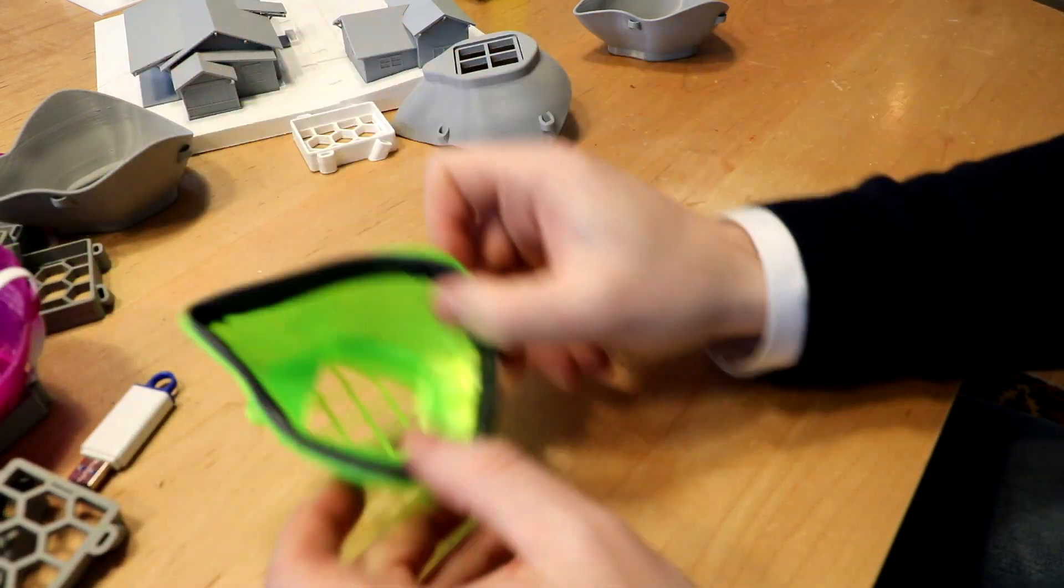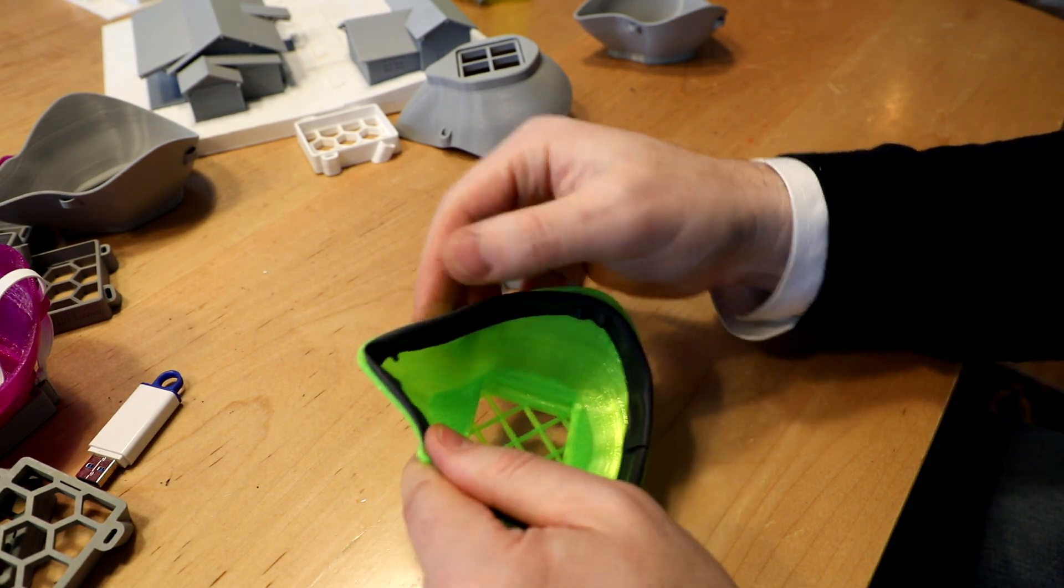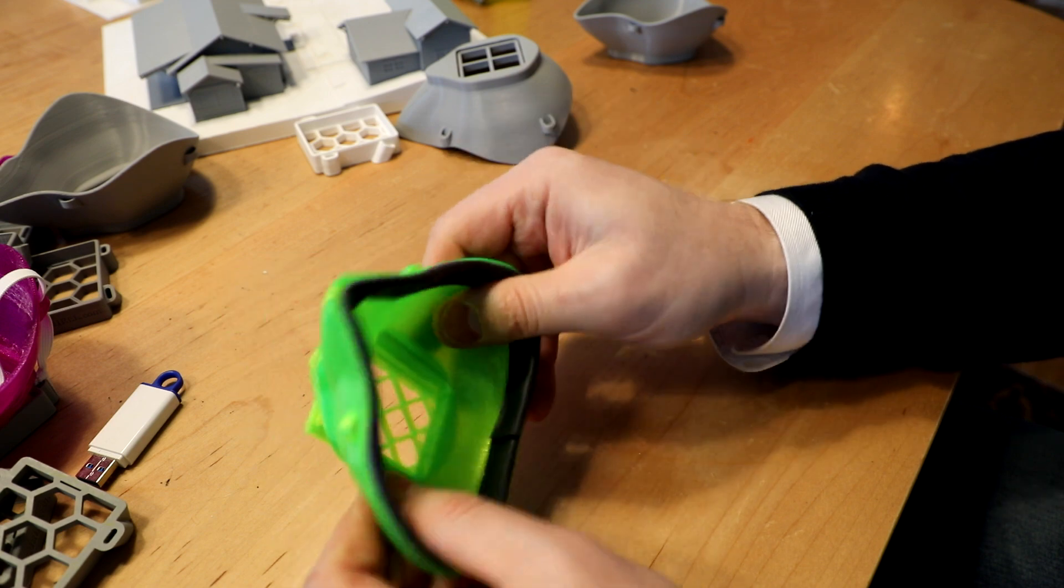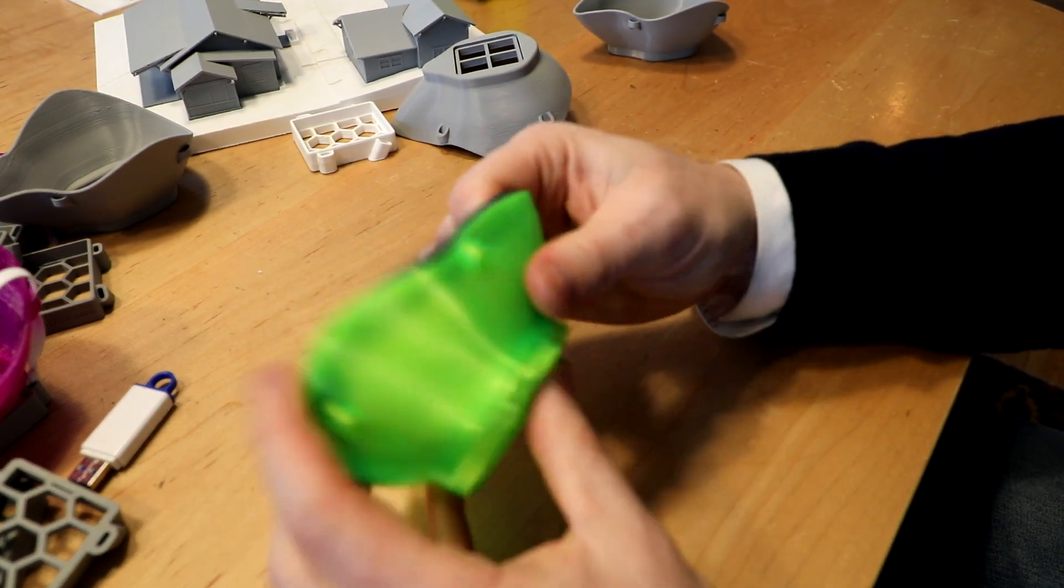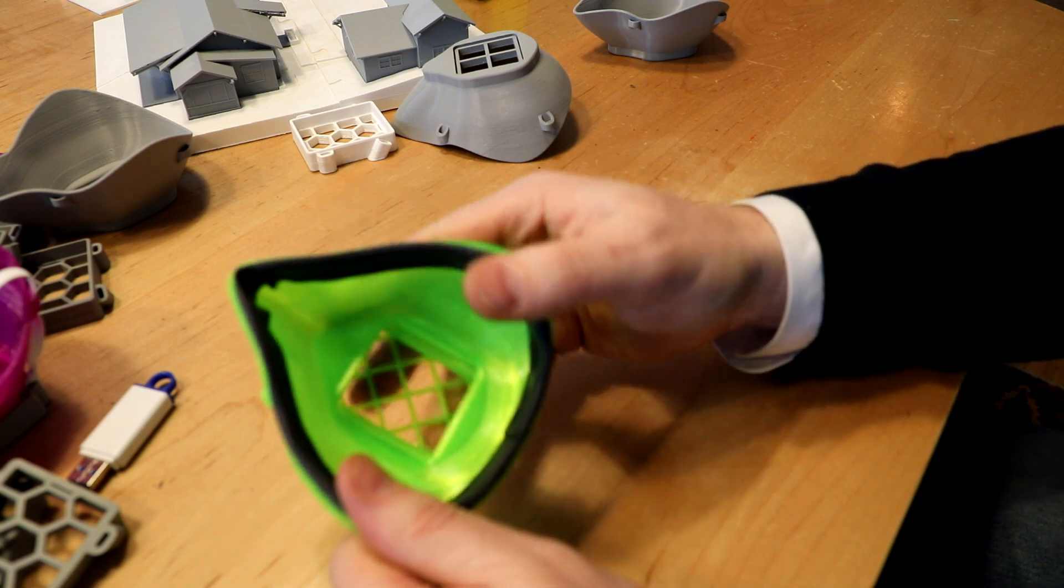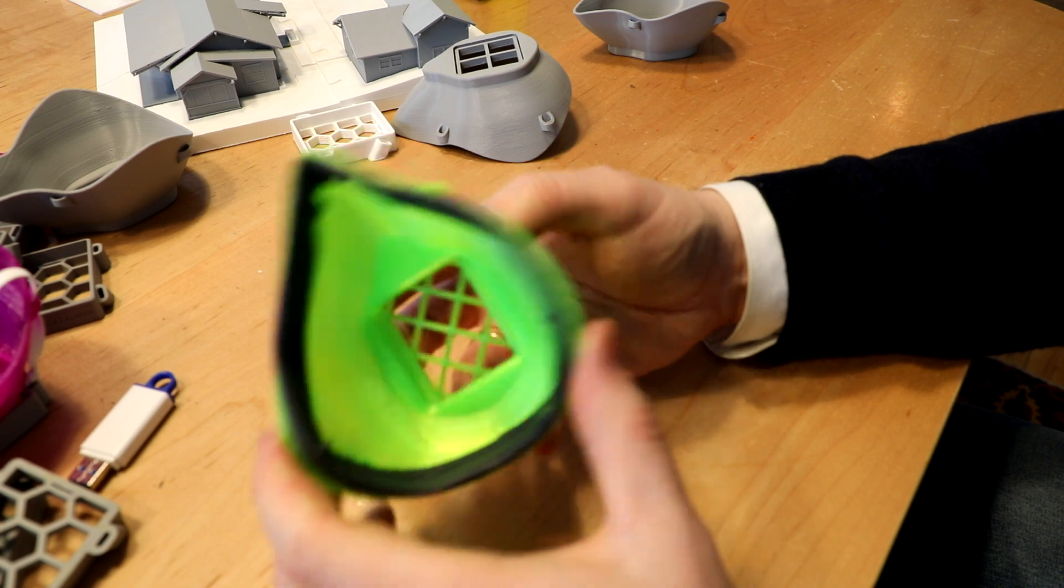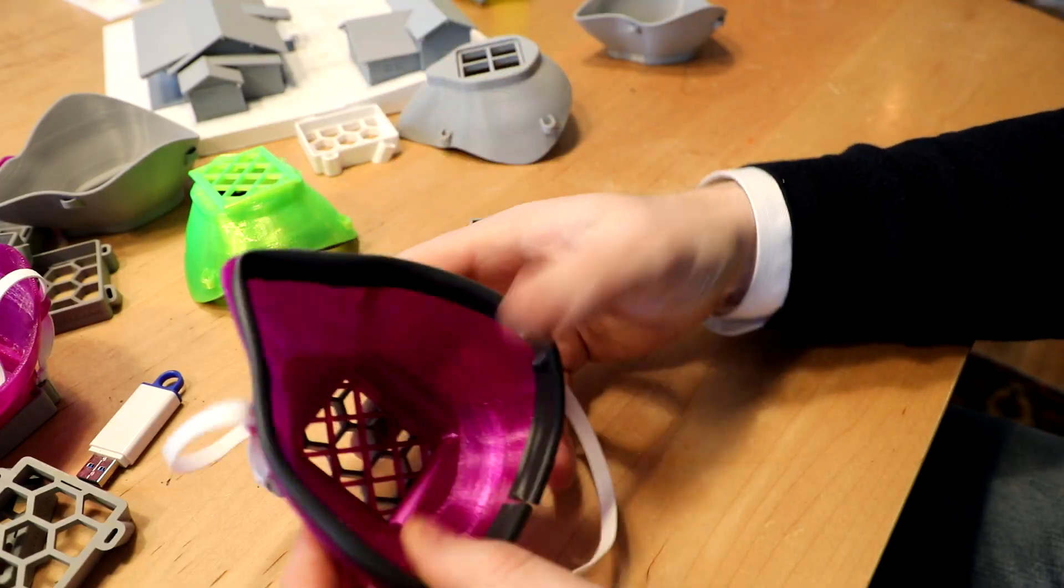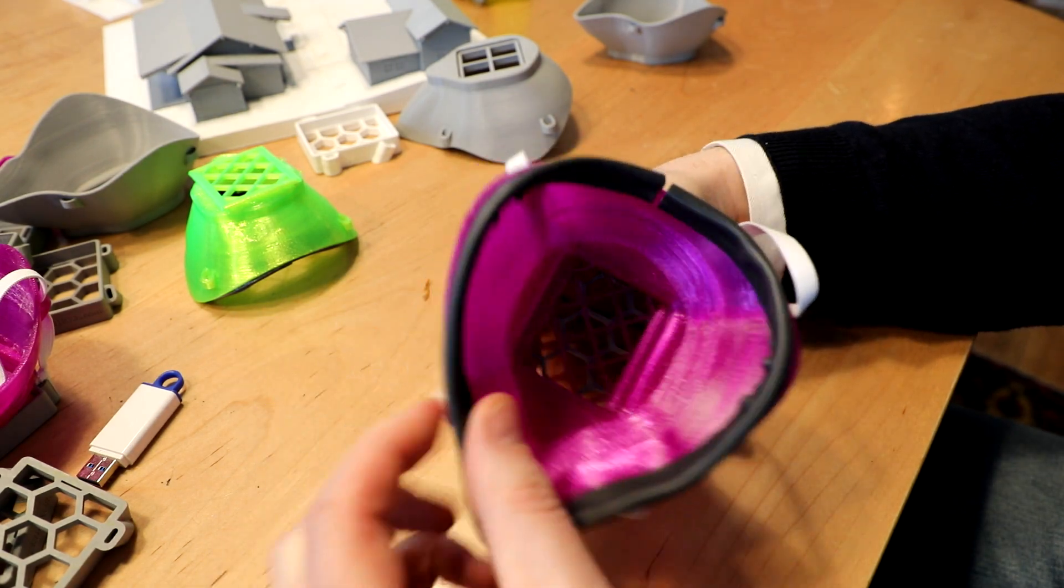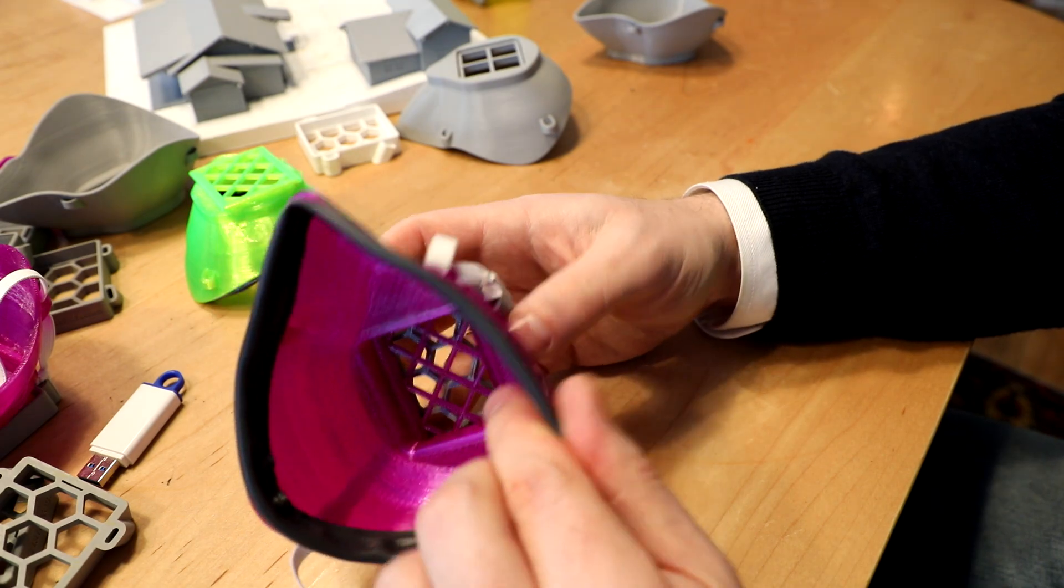The hospital just came by and gave us a sample that they were working on where they put a flexible liner around this TPU base as a prototype. This is what I think they're going to do at the hospital with our printed material. Here's another prototype that the hospital put this flexible material around the outside to try and get a tight seal to your skin.